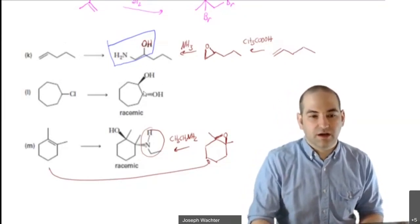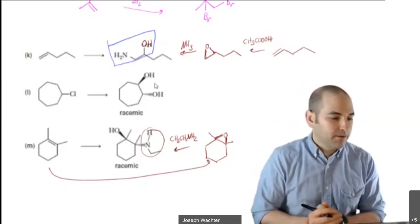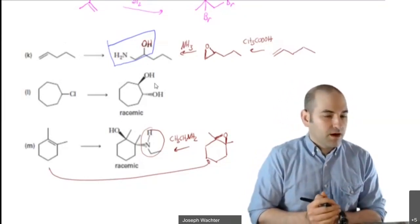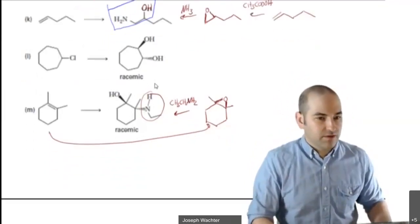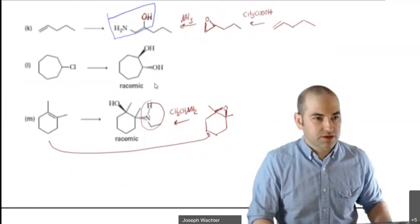When you see these sorts of things where something is added next to the carbon that has an alcohol, that's a good indication that you've got an epoxide going on. Those are good examples from Chapter 8.